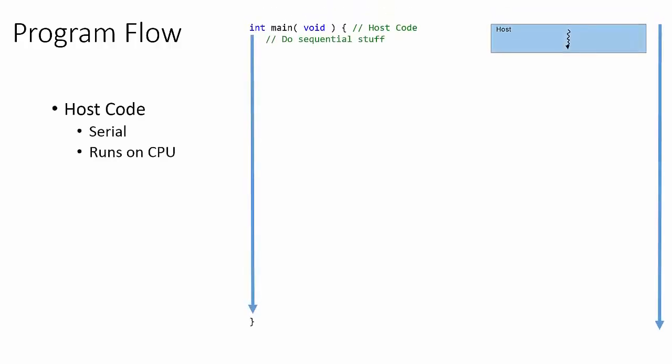Let's now take a look at how a CUDA program is organized in code. The biggest thing to remember is that the CPU is in control — that is, the host controls the entire flow of the program. The flow begins just as any normal C program would, starting in the main function. Sequential flow occurs as normal until we reach a portion of the code that we want to offload onto the GPU.